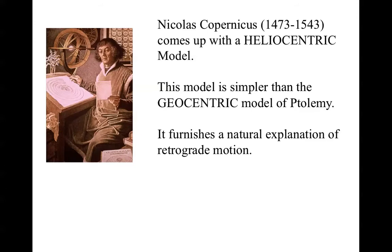Segment 7: Copernicus and the Heliocentric Model. In the last segment, we discussed the geocentric model of the universe invented by the Greeks — the model in which the Earth is the center and the planets and the stars are on fixed spheres that center around this. Nicholas Copernicus, who was born in 1473 and died in 1543, spent many years developing an alternative model of the universe in which the sun was at the center.